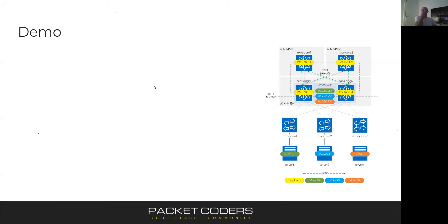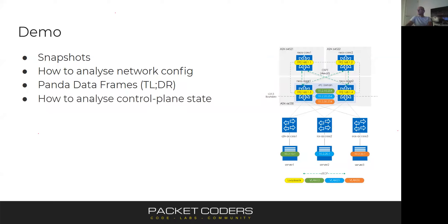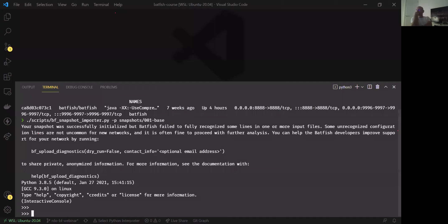Our demo is based on a legacy three-tier topology. We've got OSPF in there — just a single area — a bit of eBGP, and an L2 domain as well. Nothing too crazy. In the demo we'll look at snapshots, analyze network config, look at Pandas DataFrames, and analyze the control plane state.